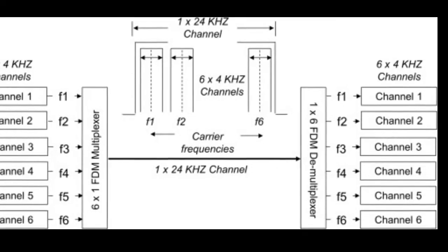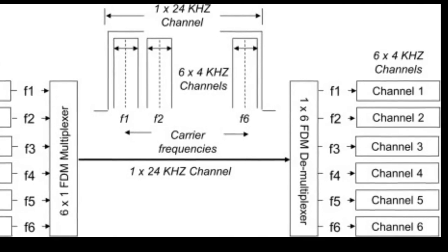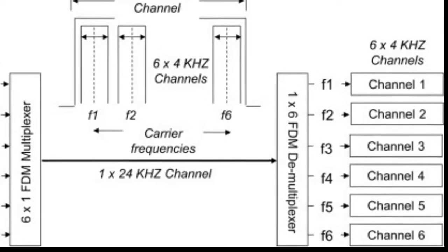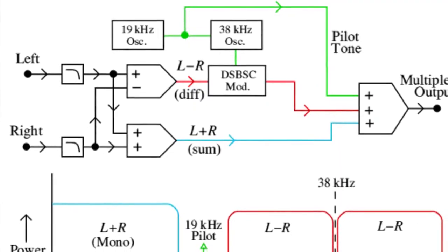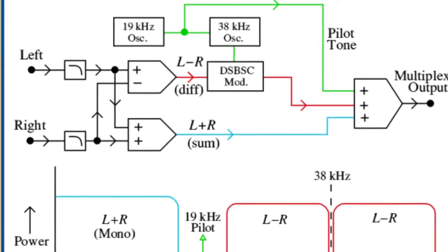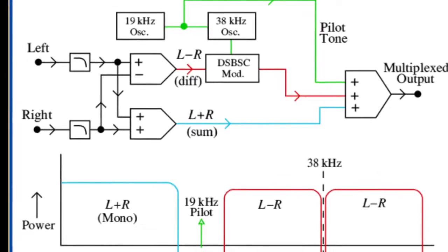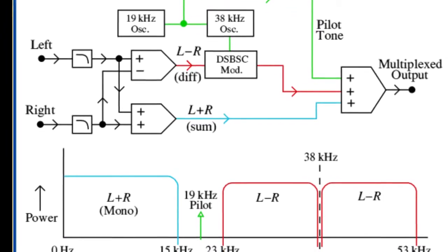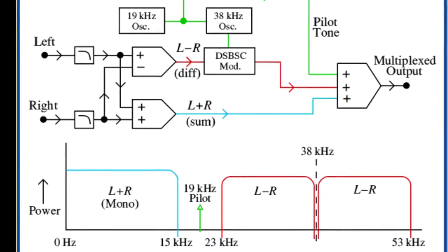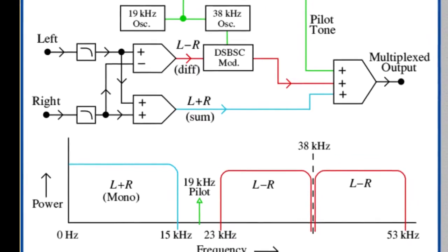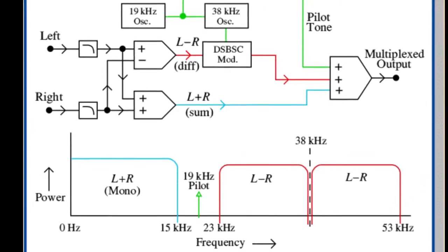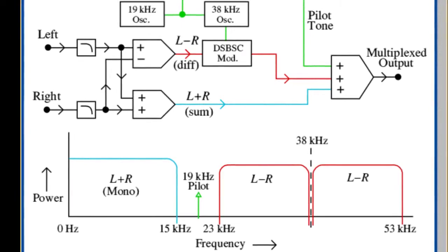FDM can also be used to combine signals before final modulation onto a carrier wave. In this case, the carrier signals are referred to as subcarriers. An example is stereo FM transmission, where a 38 kHz subcarrier is used to separate the left-right difference signal from the central left-right sum channel prior to the frequency modulation of the composite signal.